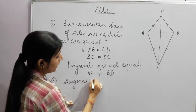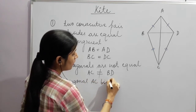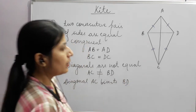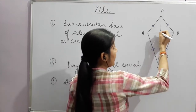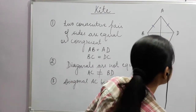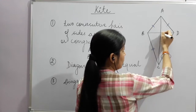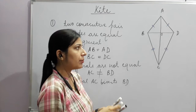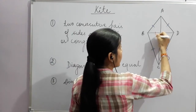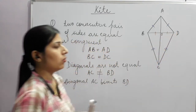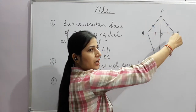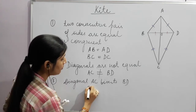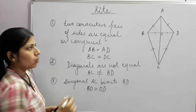Diagonal AC bisects diagonal BD. That means AC divides BD into two equal parts: BO = OD.